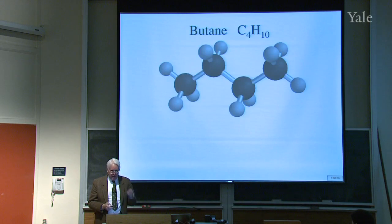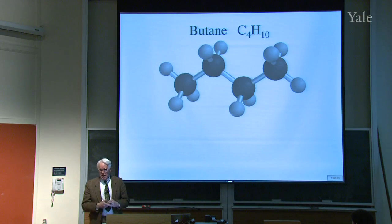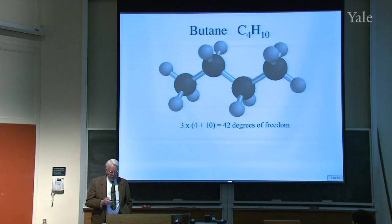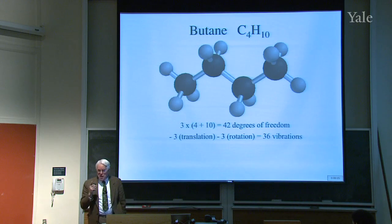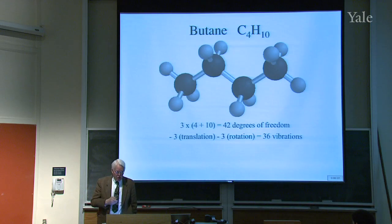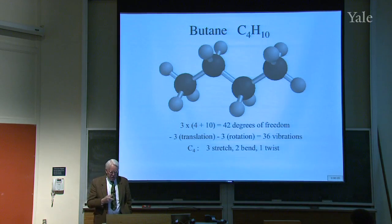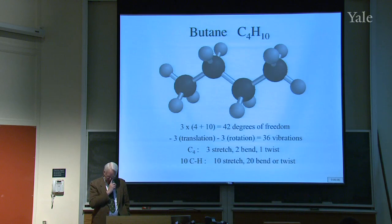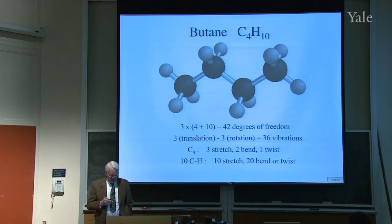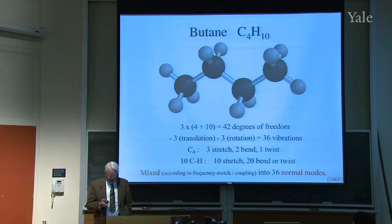Let's look at butane, C₄H₁₀. It has 42 degrees of freedom minus three translations and three rotations, giving 36 normal modes. If you just had the four carbons there would be three stretches, two bends, and a torsion. With 10 C–H bonds you have 10 stretches and 20 bends or twists. But they all get mixed up according to frequency match and coupling into 36 complicated normal modes.